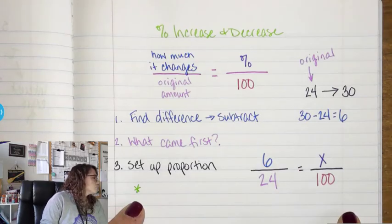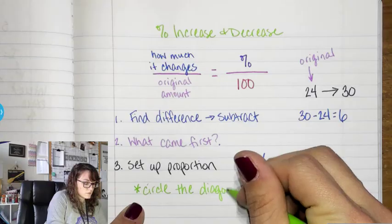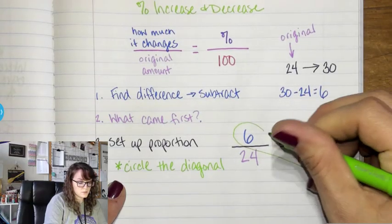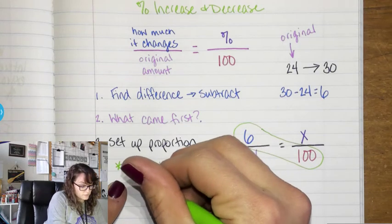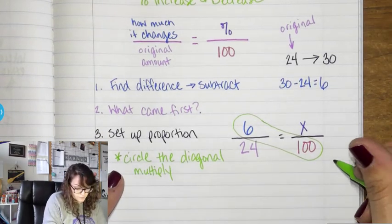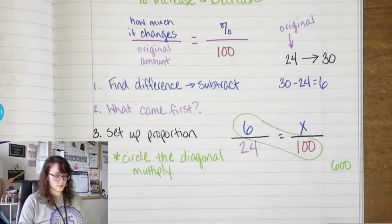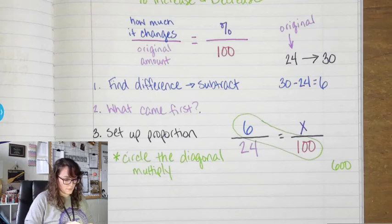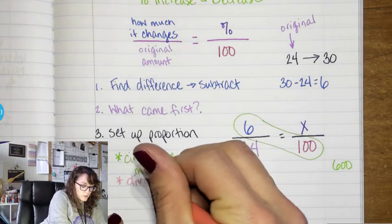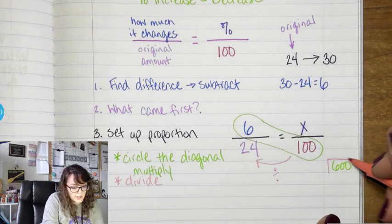To solve the proportion, circle the diagonal. 6 times 100 — multiply those two numbers. What is 6 times 100? 600. After we multiply, what do we do? Divide. Which number got left out of the circle? 24. So we divide by 24.